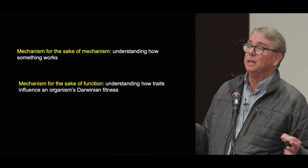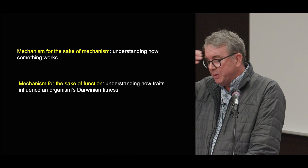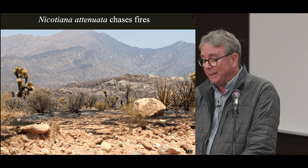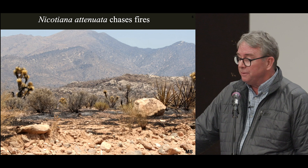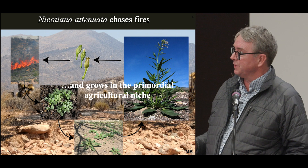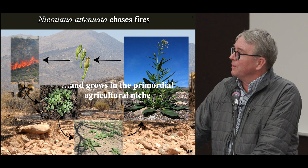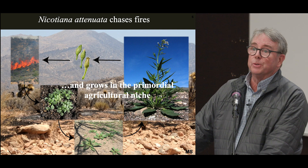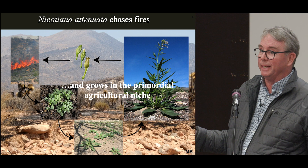I wanted to say something about the plant that we chose. I've been working on it since my graduate days at Cornell. It's a native tobacco plant, and it has the characteristic of chasing fires in ecological time. It hangs out in the seed bank for 400 years between fires, then responds to factors in wood smoke, germinates and grows. It's an annual plant for a short period of time, utilizes that post-fire environment, and then goes back into the seed bank waiting for the next fire. As a consequence, it grows in the very niche where we grow most of our agricultural plants.